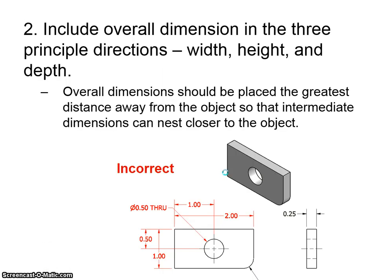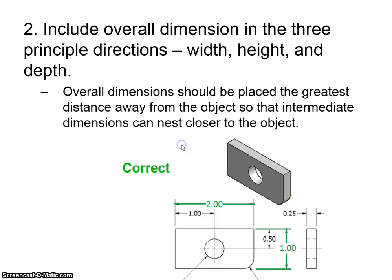Rule number two says you're going to indicate overall dimensions in the three principal directions of width, depth, and height. Whenever you place these dimensions, though, you have to place them furthest away from the object so that what are called nested dimensions are both for it. So see, this error is right here. This two should actually be up here, where this one should be down here. Same deal over here. This one should be over here. This five, this half excuse me, should be here. So you'll see there's the highlights, and then that's where they should be. Also, there's another rule, but we'll talk about that, why they moved them over to the right here.